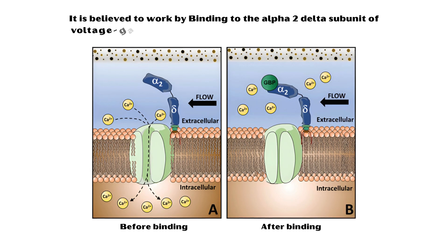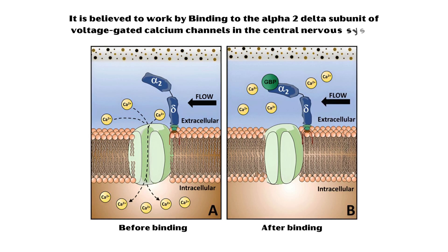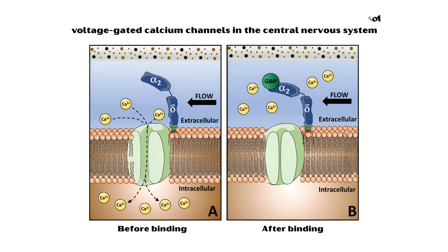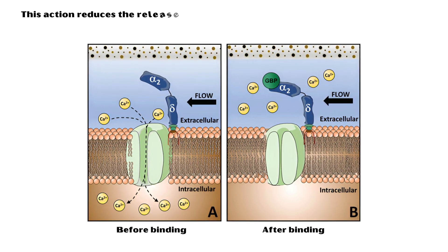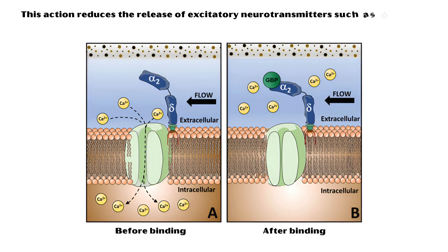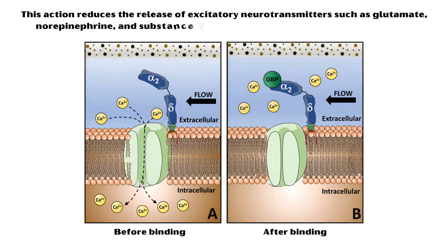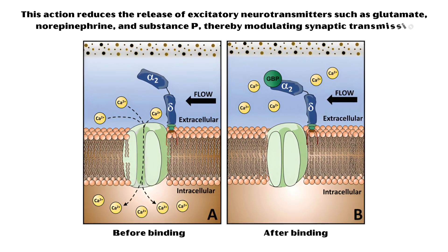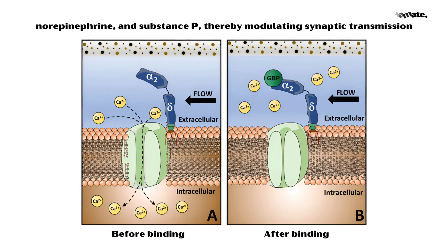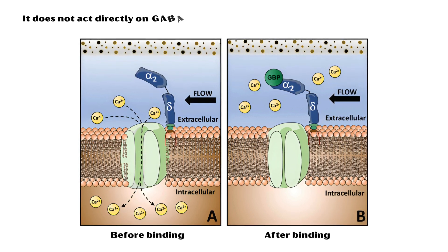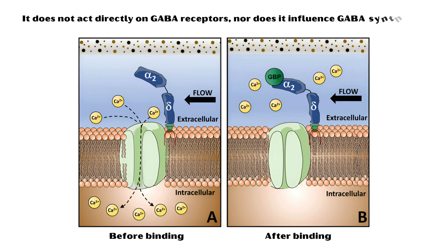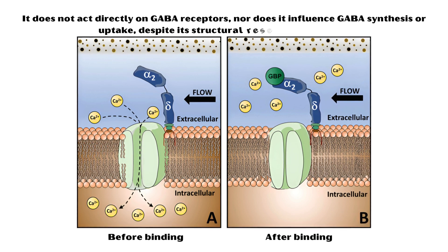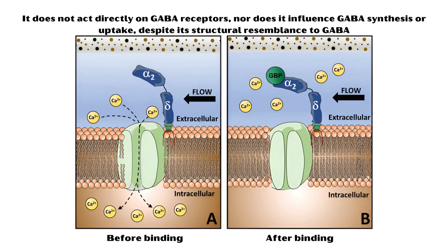Gabapentin's exact mechanism of action is not fully understood, but it is believed to work by binding to the alpha-2-delta subunit of voltage-gated calcium channels in the central nervous system. This action reduces the release of excitatory neurotransmitters such as glutamate, norepinephrine, and substance P, thereby modulating synaptic transmission. It does not act directly on GABA receptors, nor does it influence GABA synthesis or uptake, despite its structural resemblance to GABA.